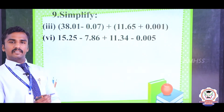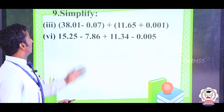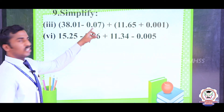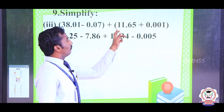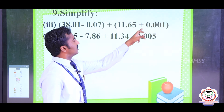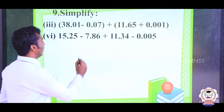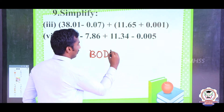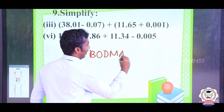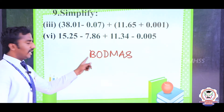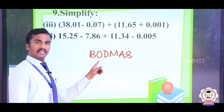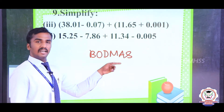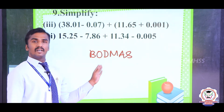Now, let us simplify: 38.01 minus 0.07 plus bracket of 11.65 plus 0.001. We know already the BODMAS rules: B means Bracket, O means Of, D means Division, M means Multiplication, A means Addition, S means Subtraction.